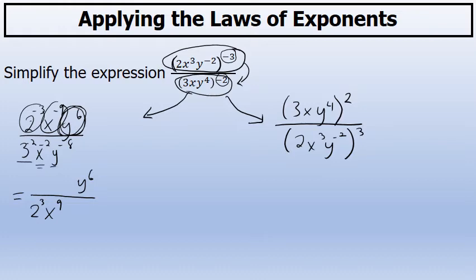Now I'll look at the three factors in the denominator. All three factors have a negative exponent, so I'll move all three factors to the numerator, where I'll write them with a positive exponent. There are a few simplifications that can be done at this point.